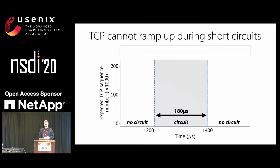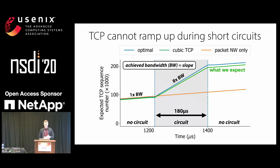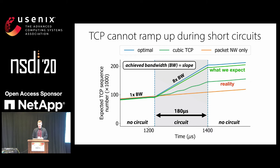The packet network is in use at other times. I'll show the theoretical optimal capacity of the network — absolute full utilization — and since this is a plot of expected TCP sequence number, achieved bandwidth is just the slope of the line, in this case 1x versus 8x. I'll also show a baseline of just using the packet network — any improvement above the orange line is the benefit of having a reconfigurable DCN. If we send a TCP cubic flow over this testbed, what we'd like to see is TCP getting basically full utilization, but in reality it doesn't, because 180 microseconds is only a handful of RTTs — not enough time for TCP to increase its sending rate by 8x.